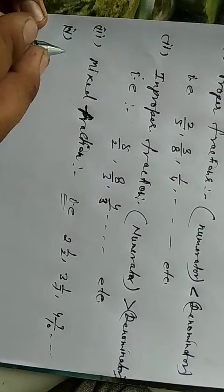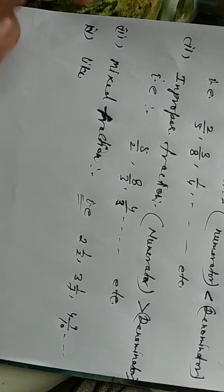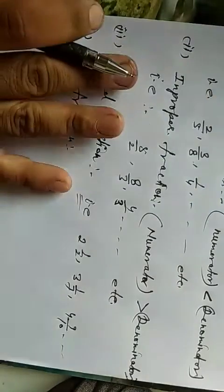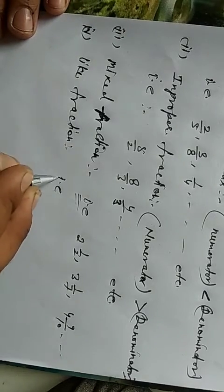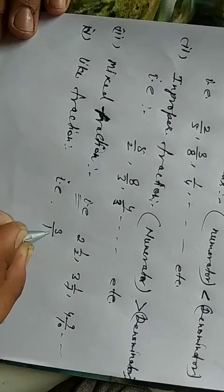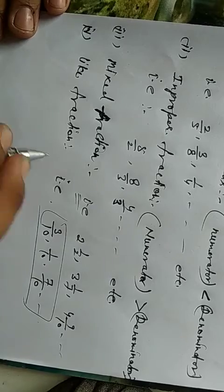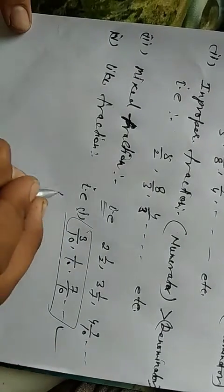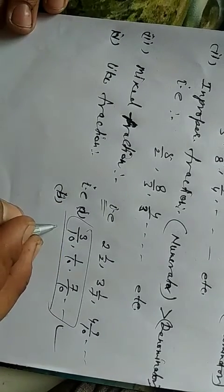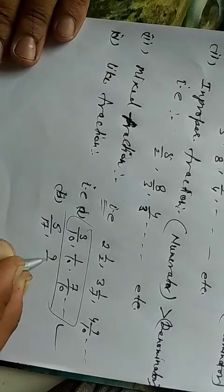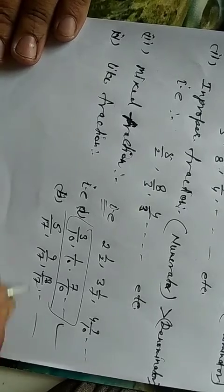Number 4 is like fraction. Like fractions are those in which the denominators are equal. For example: 3 upon 10, 1 upon 10, 7 upon 10 — these are all like fractions. Another example: 5 upon 10, 9 upon 10, 15 upon 10 — these are also like fractions.